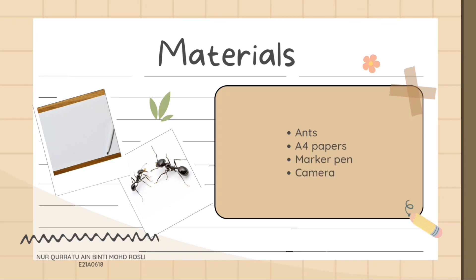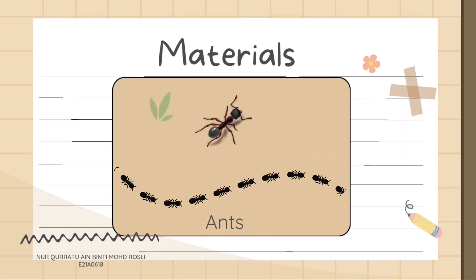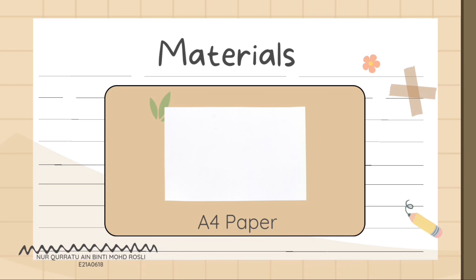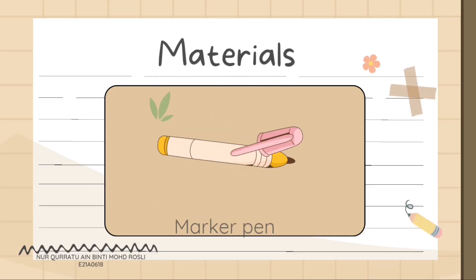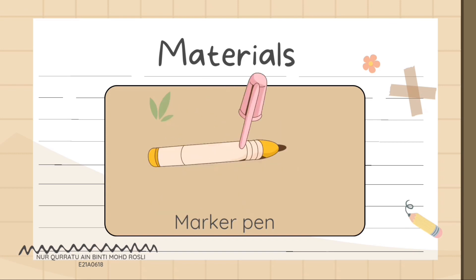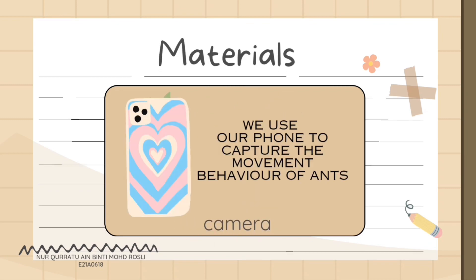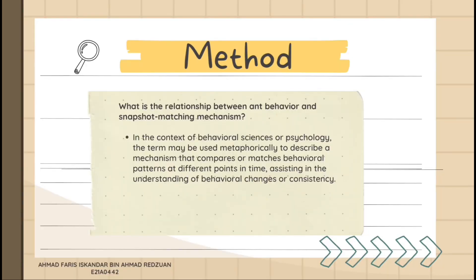Now we go to the materials used in this experiment. The first material is ants of two different sizes — big and small. The second material is A4 paper, used as the route for ants. The third material is a marker pen used to create a circle for the ants. The last is a camera to capture the movement behavior of ants.